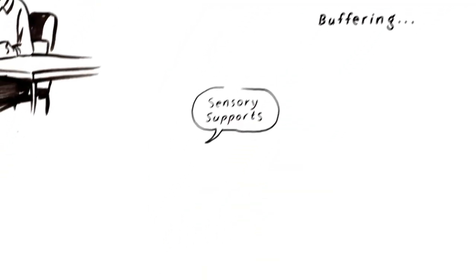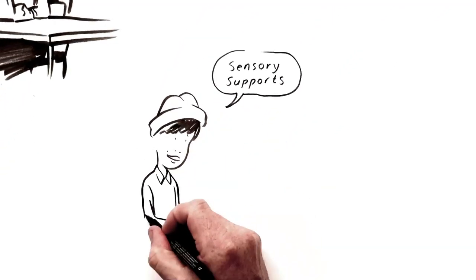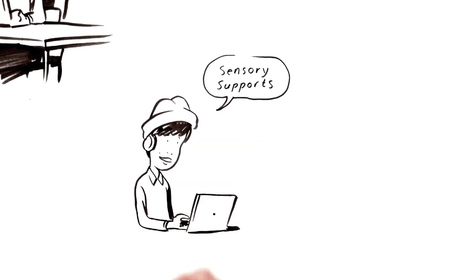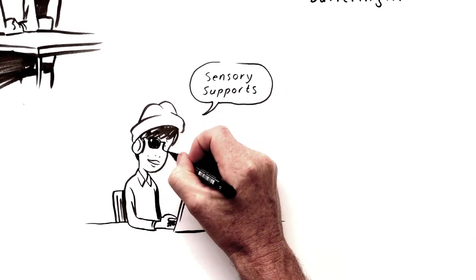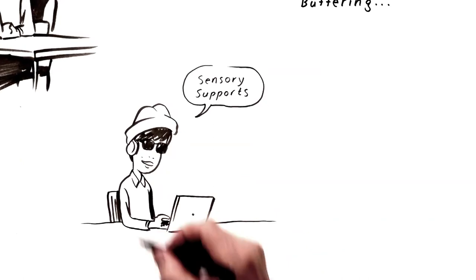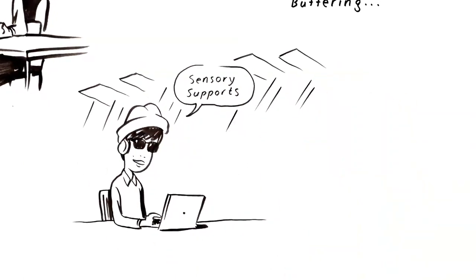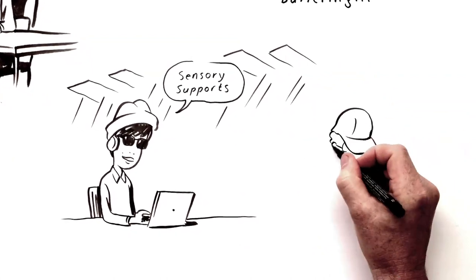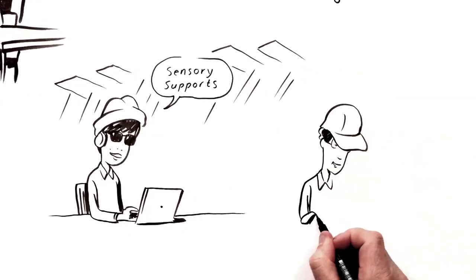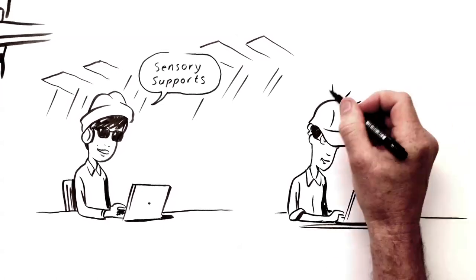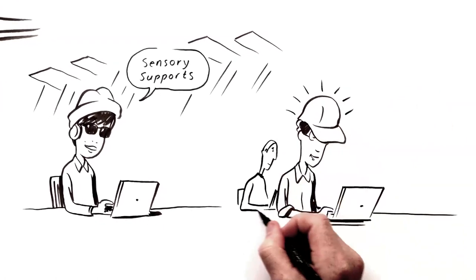Using sensory supports in the classroom was really powerful. So I'd have noise cancelling headphones. I might have sunglasses or tinted lenses to deal with the light sensitivity, particularly in classes where they have fluorescent harsh light. I actually have a cap that I wear. I'm one of the only people in my school who's allowed to wear it. It helps block out the lights, which helps me not have a sensory overload.